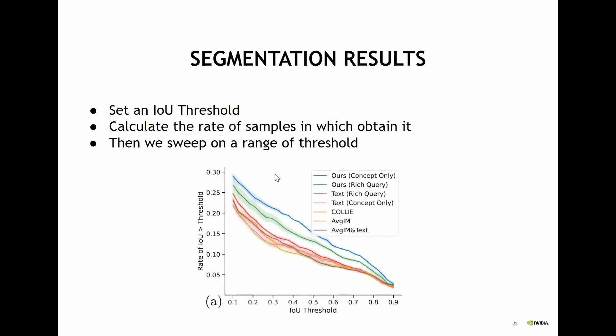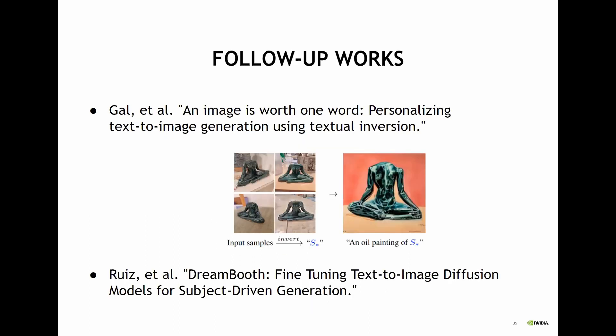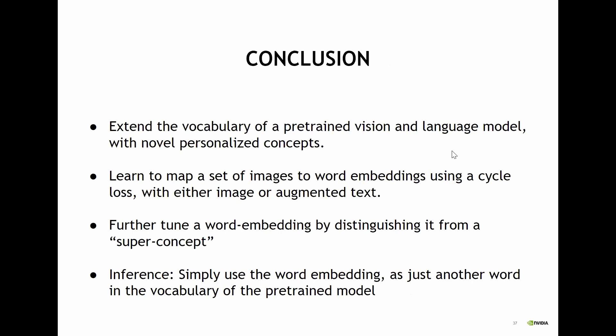Our work inspired follow-up work by Gal et al., aiming to learn a personalized concept for generative tasks, and Royz et al. with another work in a similar setting. To conclude, we extend the vocabulary of a pre-trained vision-language model with novel personalized concepts. We learn to map a set of images to word embeddings using a cyclic loss with either image or augmented text inputs. We further tune the word embedding by distinguishing it from a super-concept (coarse-grained regularization). During inference, we simply use the word embedding as just another word in the vocabulary of the pre-trained model.